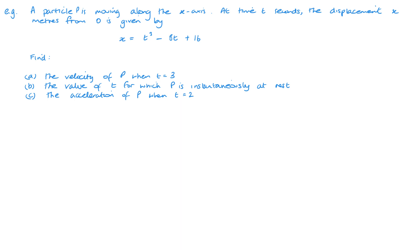Here's our first example, very similar to the ones in the last video. A particle is moving along the x-axis, with time t seconds and displacement x metres from the origin. It's common in these questions to use x for displacement instead of S when moving only in the x direction. So here we have x = t³ − 8t + 16.